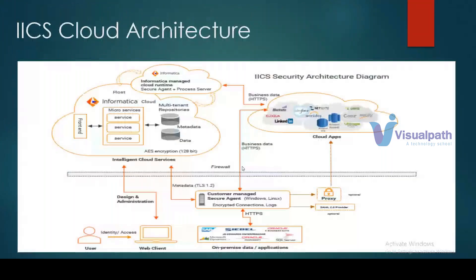The IICS cloud architecture is very important to understand. A user logs into a machine with a user ID and password through identity access, uses the web client to perform design or administration functions, and the metadata gets exchanged to the Informatica Cloud hosted multi-tenant repositories — repositories managed by the Informatica vendor that store the metadata of jobs.